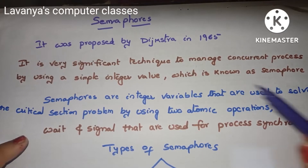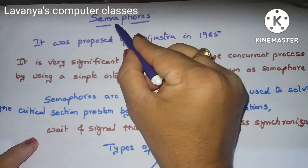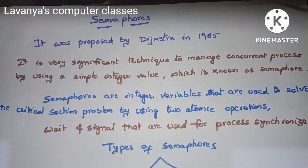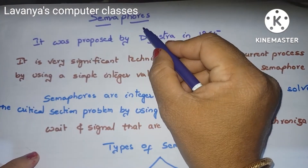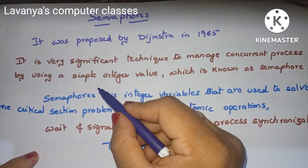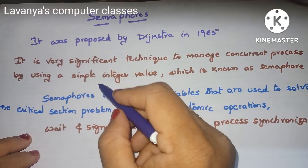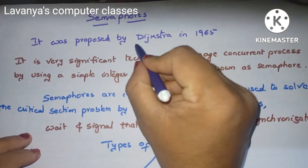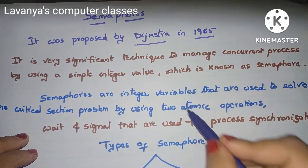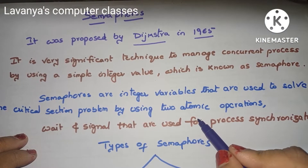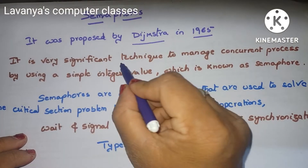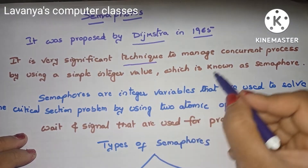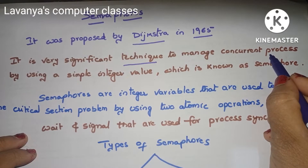Welcome to Lavanya's computer classes. In this video we will explain semaphores, a very important topic in operating systems. Semaphores were proposed by Dijkstra in 1965. It is a very significant technique to manage concurrent processes.